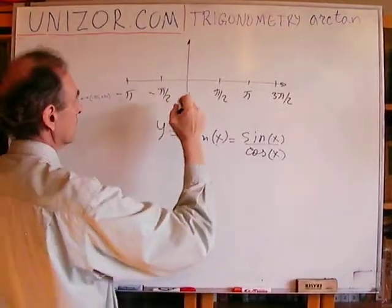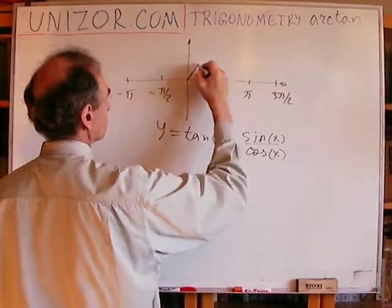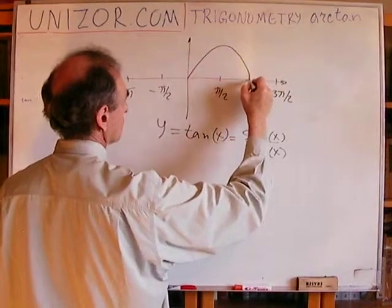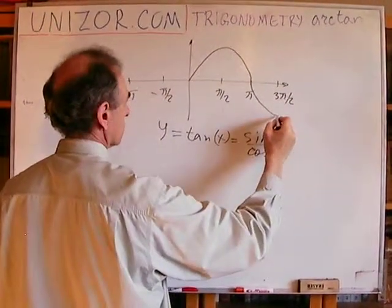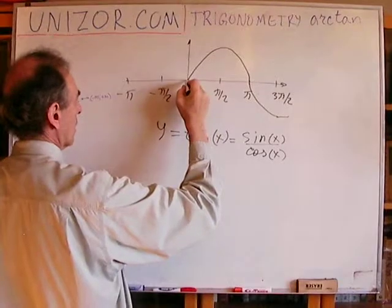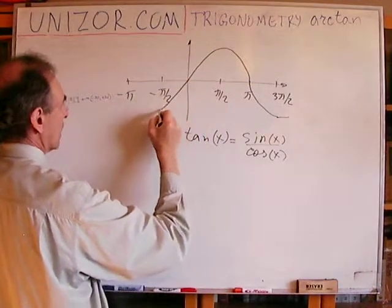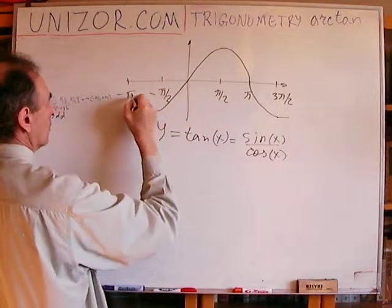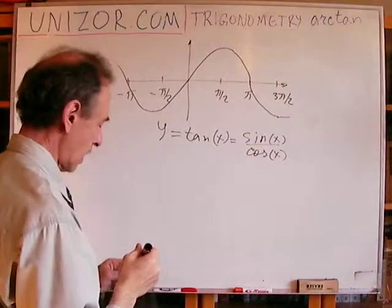So sine goes from zero to one, and then to zero, and then to minus one, etc. Minus one, one, etc. That's how sine goes.